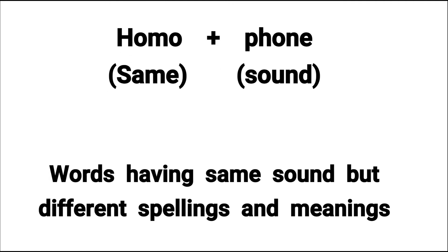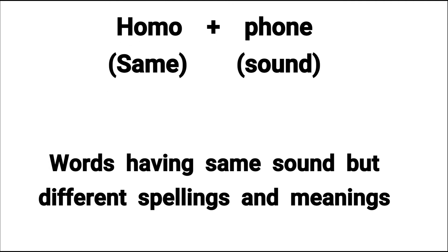Well, first of all, aap homophone jo word hai, uska meaning samjho. Homophone dho words se milke bana hai — homo and phone. Homo means same and phone means sound. So basically, words having the same sound but different spellings and meanings. Unka pronunciation same hona chahiye but different spelling and meanings. Unhe hum homophones kahte hai.